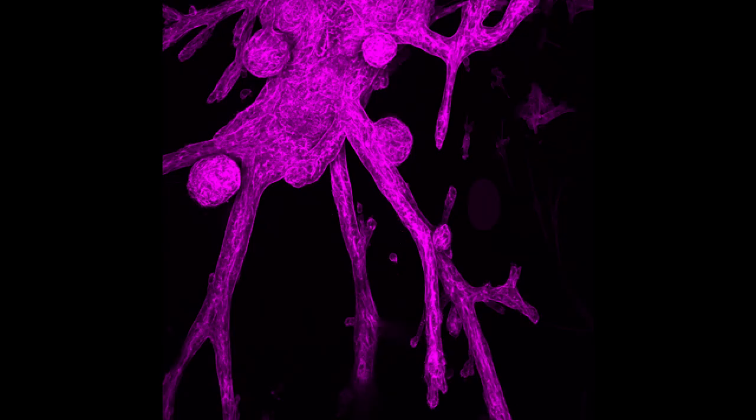Normally lobes are present at the ends, but in this chemically inhibited structure you have these narrow ducts instead, without any lobes. This example nicely highlights the role of the gene in normal lobular development.